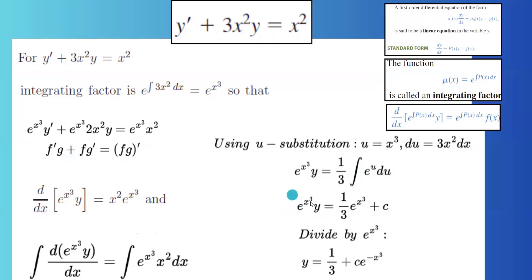So e to the x cubed y is one third e to the x cubed plus c. Divide everything by e to the x cubed, where y becomes one third plus c e to the power negative x cubed.